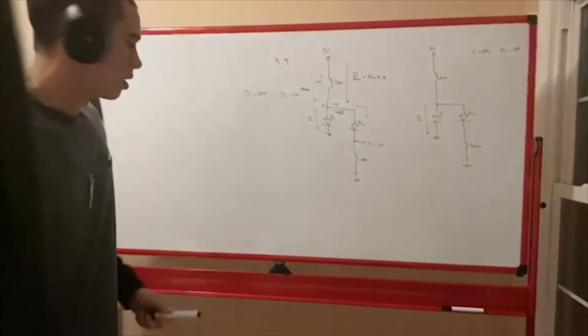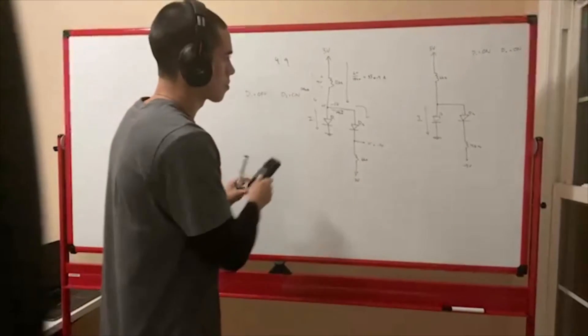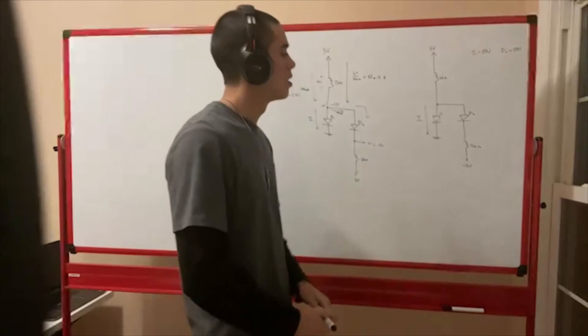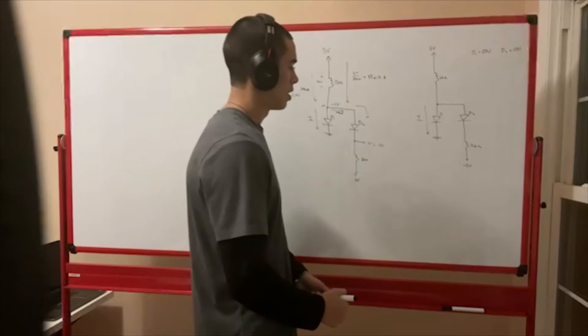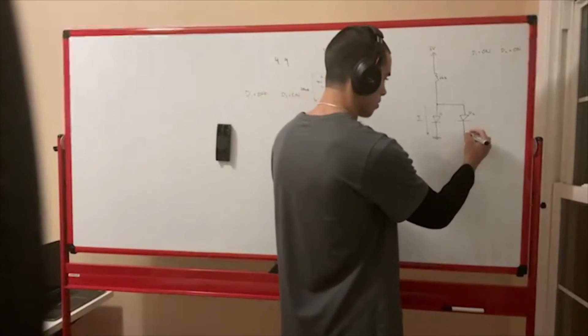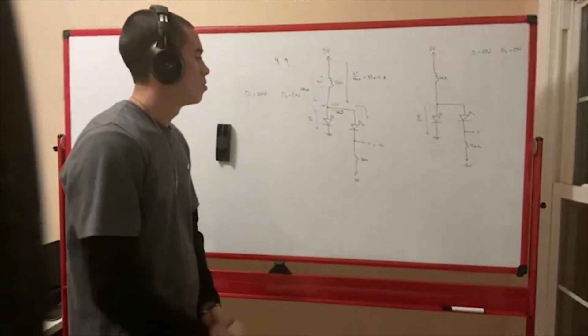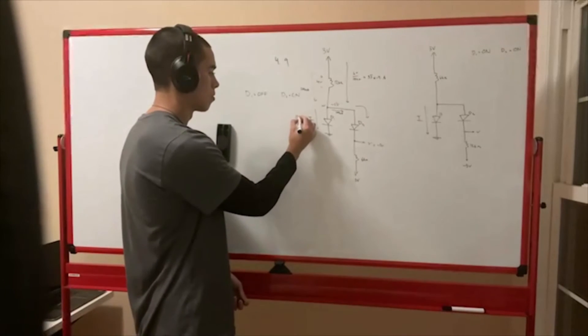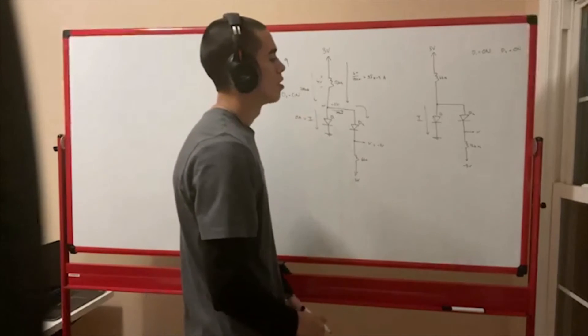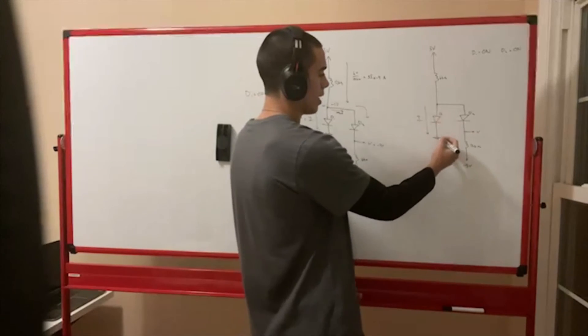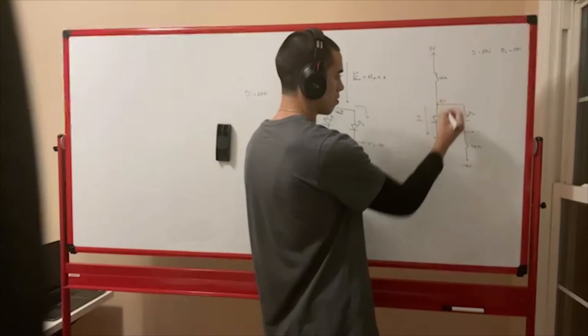Now let's do the next one. D1 is on and D2 are on. So if both of them are on, then this is conducting right-ended shorts. So everything here is 0 volts.